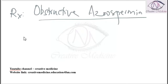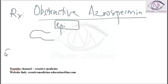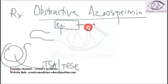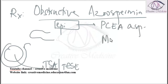If the sperm is present in the testis, we can do testicular sperm aspiration (TESA) or testicular sperm extraction (TESE). For sperms present in the epididymis, percutaneous epididymis sperm aspiration (PESA) or microsurgical epididymis sperm aspiration (MESA) can be done.